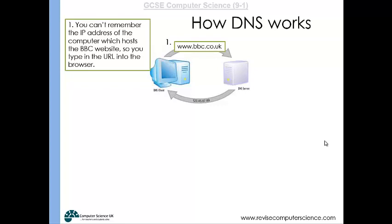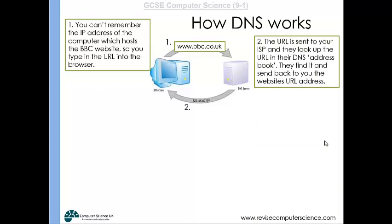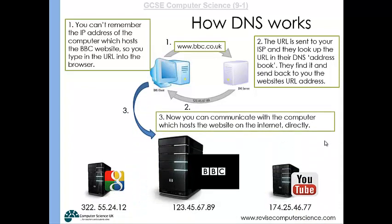So you type into your browser www.bbc.co.uk. At that point, your computer cannot connect to the BBC website because it doesn't know its IP address. So what it does is your computer will send that URL to your ISP, your Internet Service Provider. They will look up that URL on their DNS, which is like an address book. They'll find bbc.co.uk in their database and next to that address they will have an IP address for that particular website. That IP address will then be sent back to your computer so that it can communicate directly with the computer which hosts that website, and you can then visit it. And that's how DNS works.